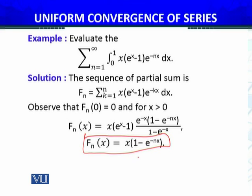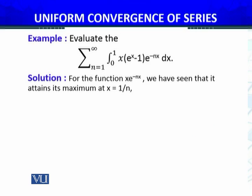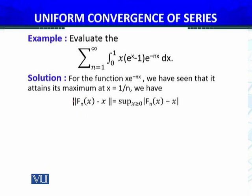Now I will prove that f_n(x) converges to f(x) = x, the identity function. Observe that f_n(x) = x - x · e^(-nx). The function x · e^(-nx) is a function of one variable and it attains its maximum value at x = 1/n. I have done similar examples in Analysis 1 and at the start of Analysis 2 in sequences of functions.